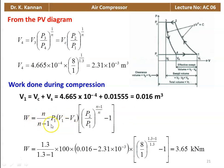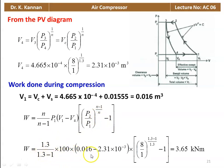Work done for a single-acting compressor: n by n minus 1, into P1 into (V1 minus V4) into [(P2 by P1) to the power (n minus 1) by n minus 1]. Substituting all numerical values: 1.3 divided by 0.3 into 100 into (0.016 minus 2.31 times 10 to the power minus 3) into [(8 by 1) to the power (0.3 by 1.3) minus 1] equals 3.65 kilonewton meter.